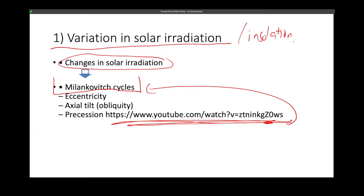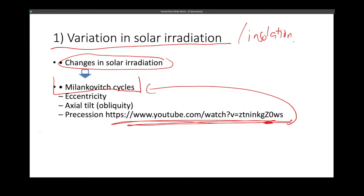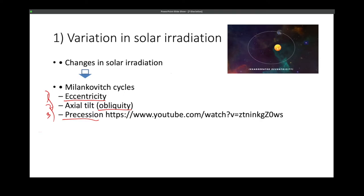The Milanković cycle involves at least three processes. We have your eccentricity, your axial tilt or obliquity, and your precession. Eccentricity basically talks about the circularity or ellipticalness of Earth's orbit. If the Earth's orbit is more or less circular, you get a hotter climate because you're closer to the sun. If you have a more elliptical orbit, where portions are farther from the sun, you get a colder climate.